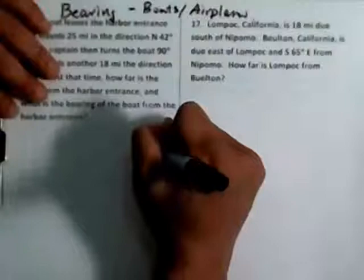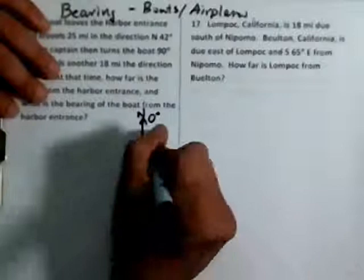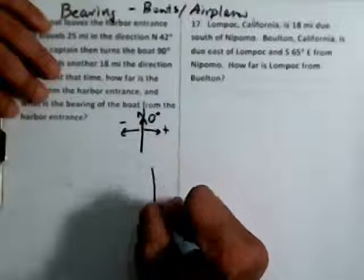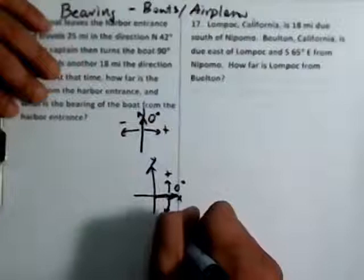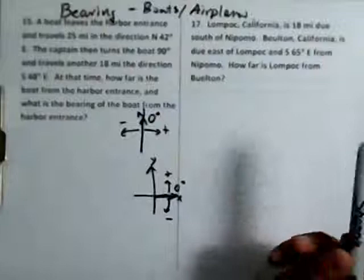Bearing is a little bit different than standard position. Here, north is going to be the zero degree mark. Going this way is positive, that way is negative. That's the bearing. Whereas in standard position, here's y, here's x, that's zero degrees right there. Going this way is positive to the up, going down is negative. So it's a little bit different.